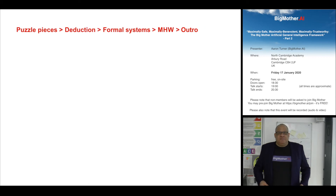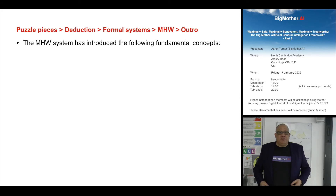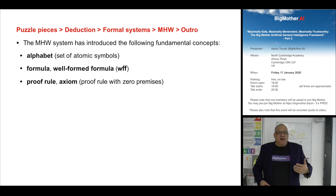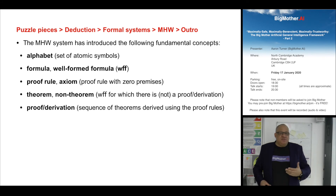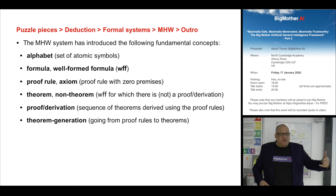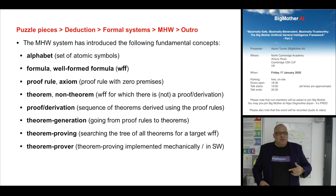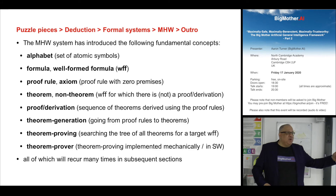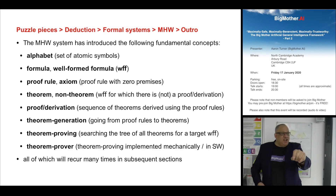We have introduced the following concepts: what an alphabet is, what a formula and well-formed formula are, proof rules, axioms, theorems, non-theorems, the concept of proof or derivation, the process of generating theorems from rules, the process of proving a theorem, and the concept of a theorem prover — a program to automate that. These concepts recur in any logic you look at. We'll look at more sophisticated formal systems that are actual logics with real utility, but it's much easier to start with this toy formal system.